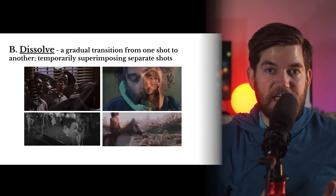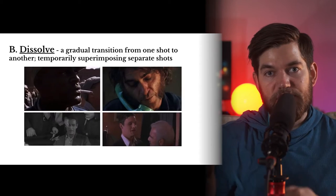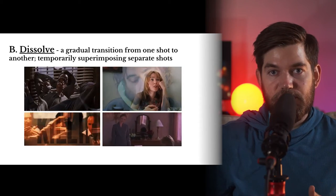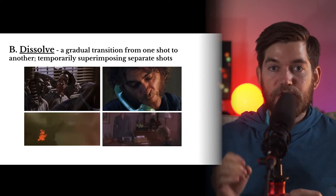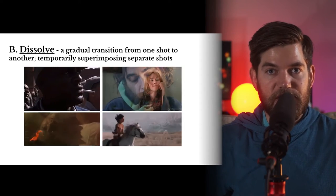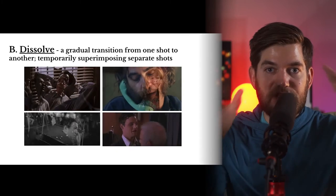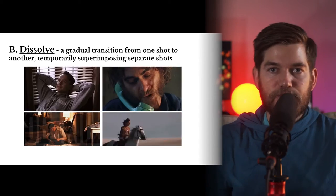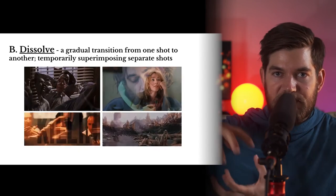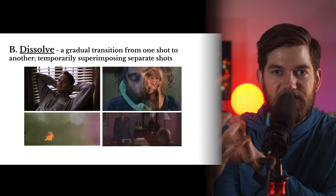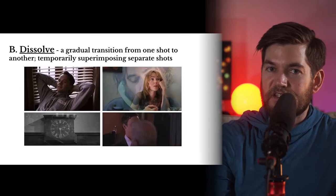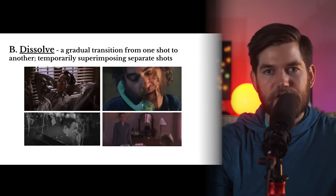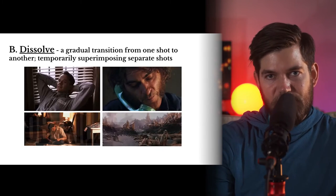Our next transition type is called a dissolve. A dissolve is like a fade, but instead of fading to a solid color, you transition into another shot. It's a gradual transition from one shot to another by superimposing the two images. The two separate shots are temporarily superimposed by the editor. Superimposing means to put on top of, so we can see one shot temporarily on top of the other. In the top left example, you can see that the dissolve would be a good transition for a character remembering something.